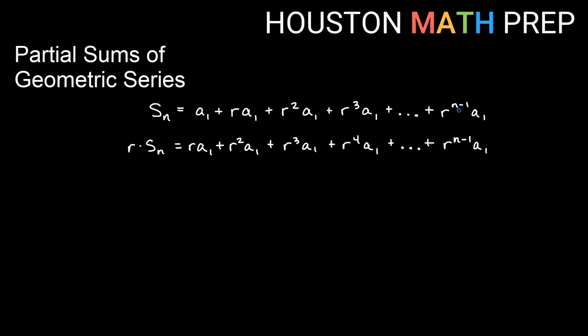I would still get to this point at some point in my list, but then I would go one past it because if you multiply this times r, you're going to get r to the n, not just r to the n minus 1.